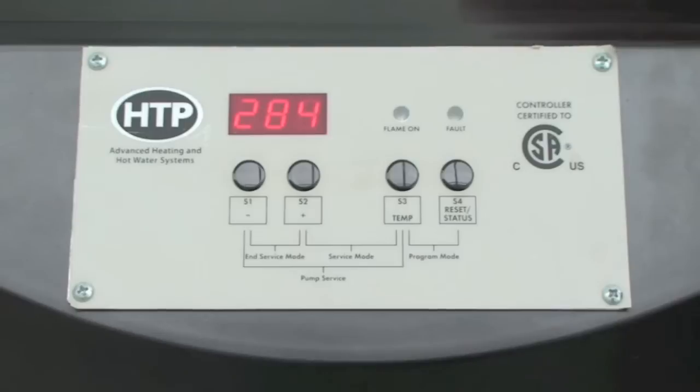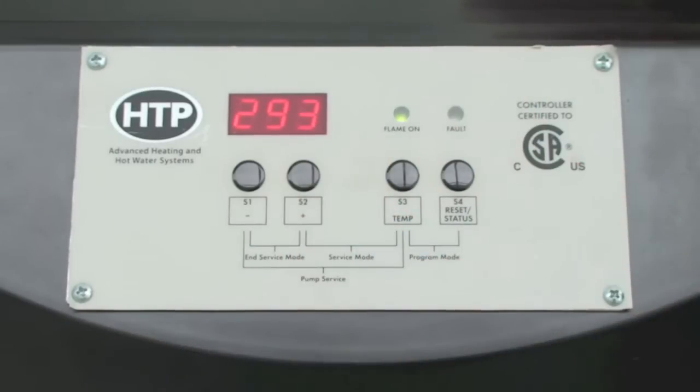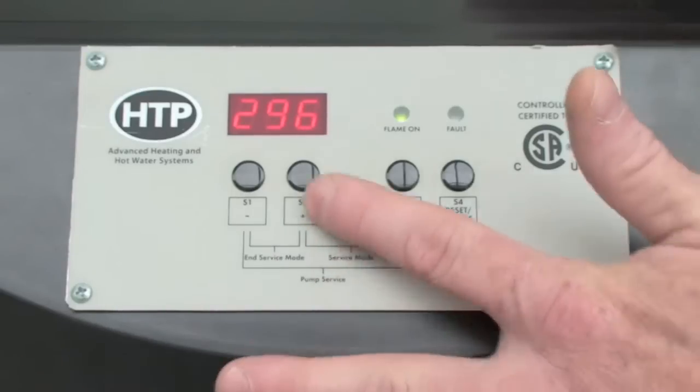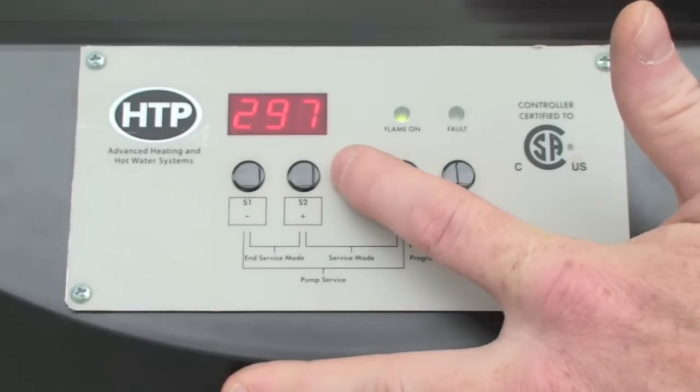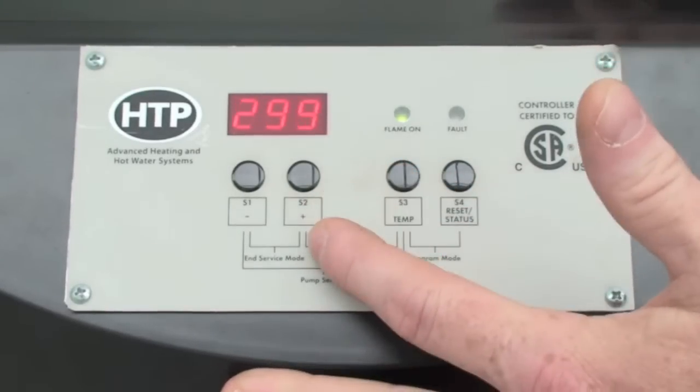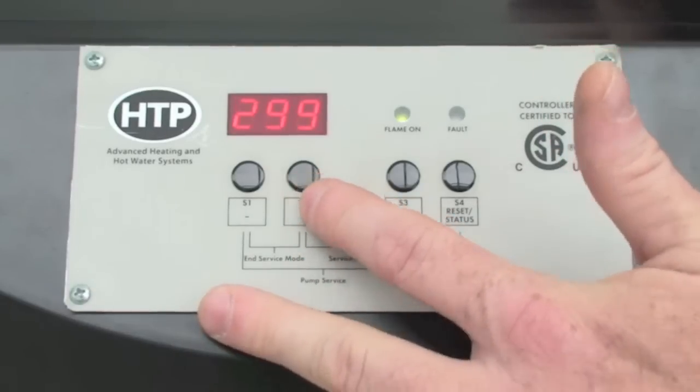It will show you the three-digit fan speed multiplied by 10, which is your RPM value, and it will show you service on the screen. Once the combustion system has initiated and flame has been proven, it takes about five seconds. It will allow you to control the fan speed up and down.